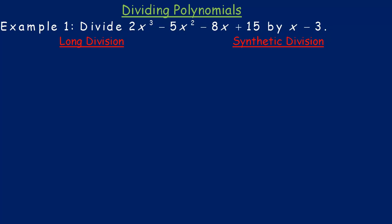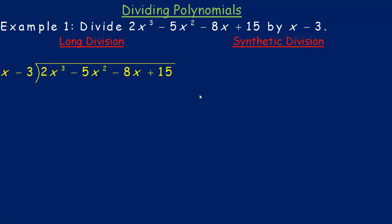In this video, we're going to take a look at how to divide polynomials, and I'm going to show you two different methods. We're actually going to divide two different ways. We're going to divide 2x cubed minus 5x squared minus 8x plus 15 by the binomial x minus 3. We're going to take a look at long division first, and then another method called synthetic division. In long division, you write it just the same as you would long division with numbers. The divisor is x minus 3, and we're dividing into this cubic polynomial.